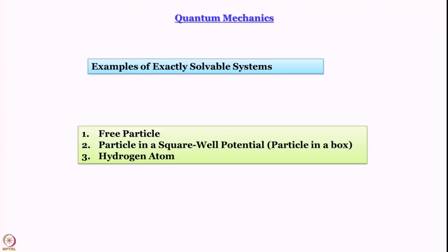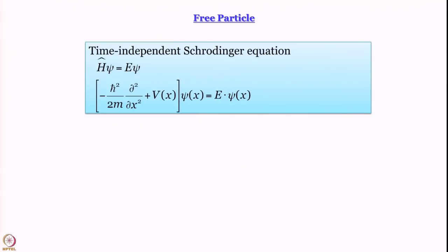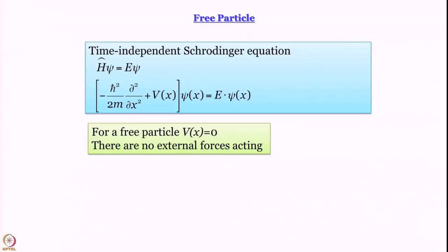We are starting with exactly solvable systems — systems in which the Schrödinger equation can be solved exactly without any approximation. We began our discussion with the free particle: something that moves without any interaction with anything else. In the time-independent Schrödinger equation we set V(x) equal to 0, because it is a free particle with no interaction and therefore no potential energy and no external force.